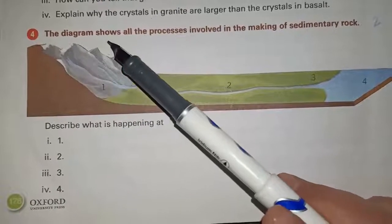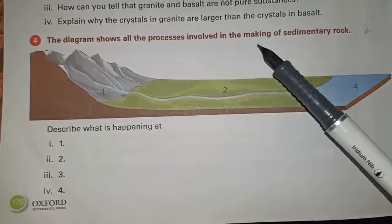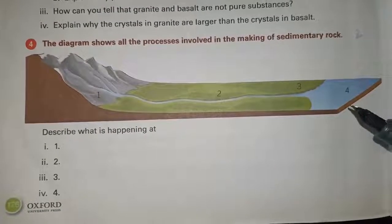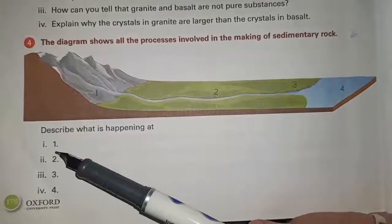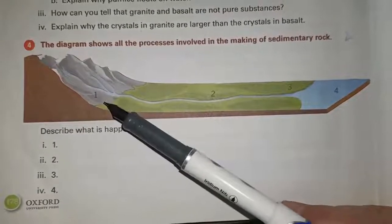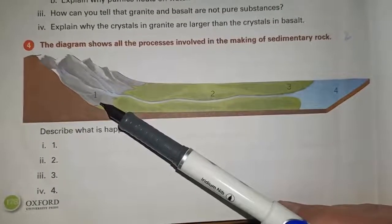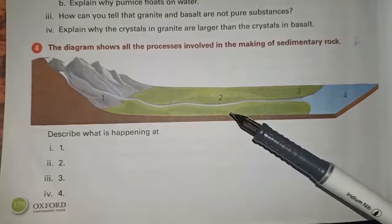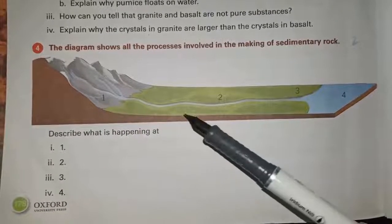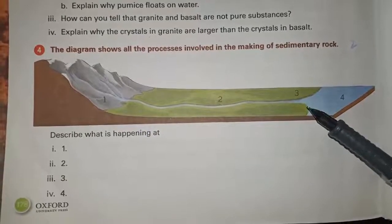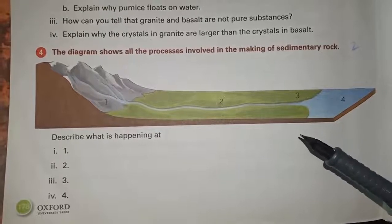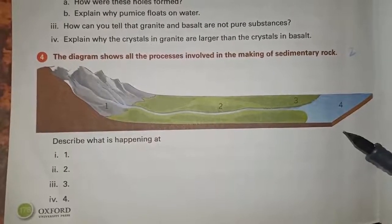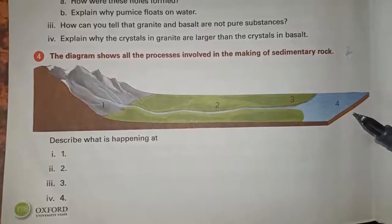Question number 4: the diagram shows all the processes involved in the making of sedimentary rock. There are 4 points and we have to describe what is happening at each. At point 1: physical and chemical weathering of the igneous rock is taking place. At point 2: particles of igneous rocks are transported by rivers. At point 3: the river slows down as it reaches the sea; sand, gravel and pebbles settle as sediments on the seabed. At point 4: layers of sediments build up over millions of years to form sedimentary rocks.